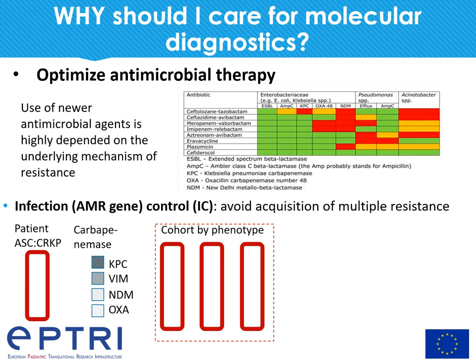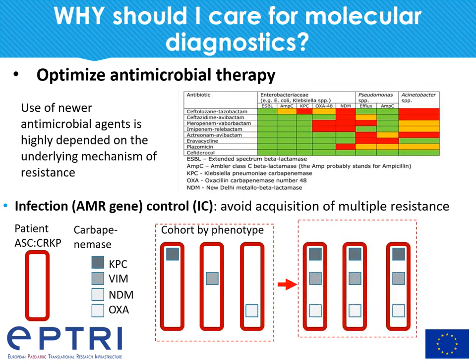For example, if we cohort patients by phenotype and not by carbapenemase genes, we may have in the same room three children colonized by carbapenem-resistant bacteria. But if we then do molecular testing, we can find that these children carry different carbapenemase genes. By cohorting them together, we may end up mixing these different carbapenemase genes.